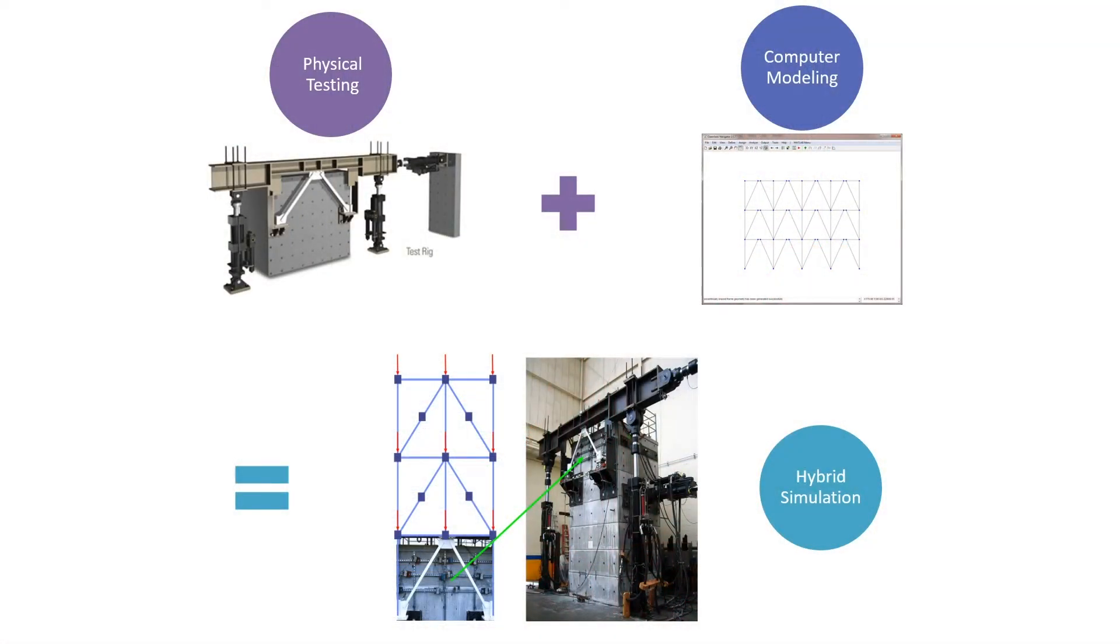Hybrid simulation is a structural testing technique that combines physical testing and computer modeling, offering a more efficient and affordable way to examine how structural systems respond to realistic dynamic loading. Rather than testing a complete structure on a large-scale physical test rig, hybrid simulation instead suggests modeling the complete structure while physically testing only a portion.